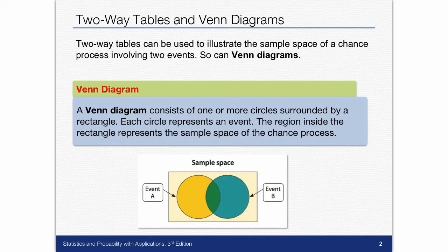A Venn diagram consists of two or more circles surrounded by a rectangle. Each circle represents an event, and the region inside the rectangle represents the sample space of the chance process.